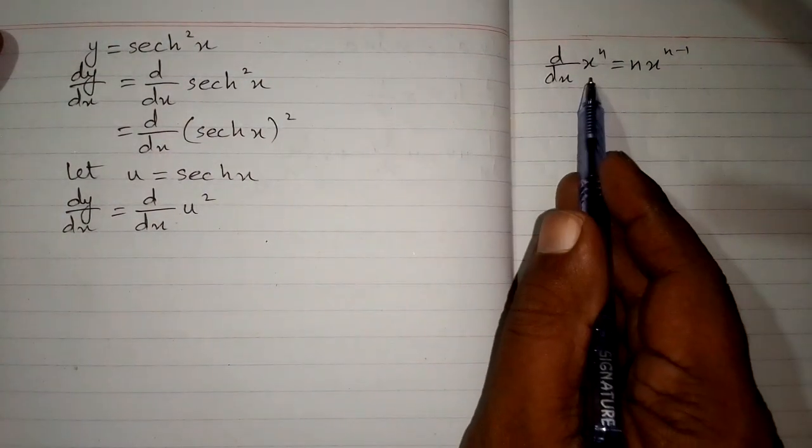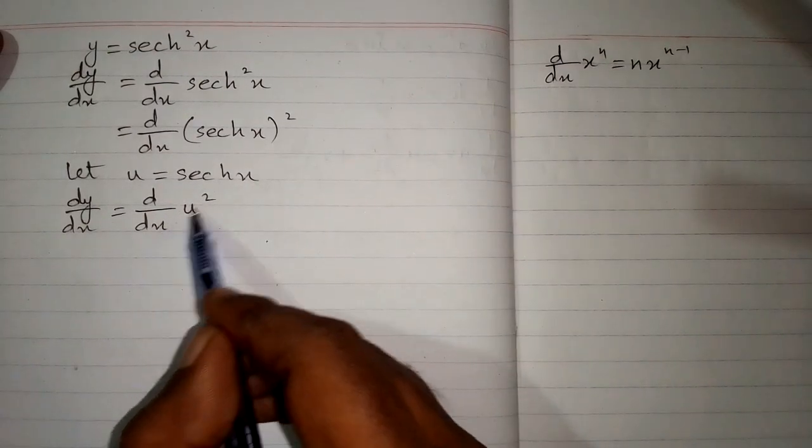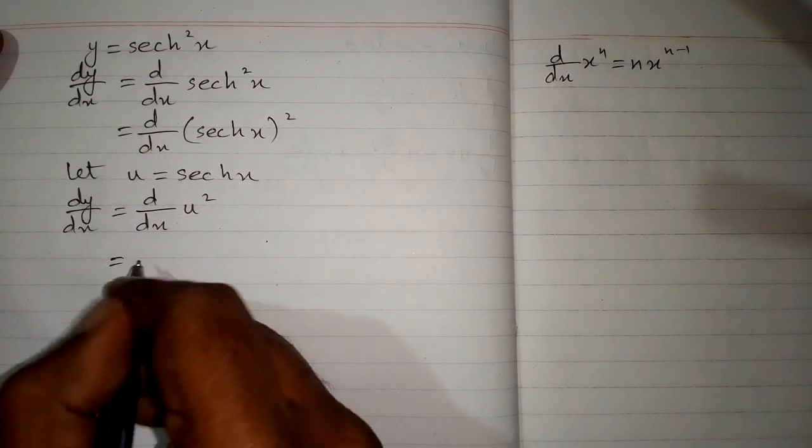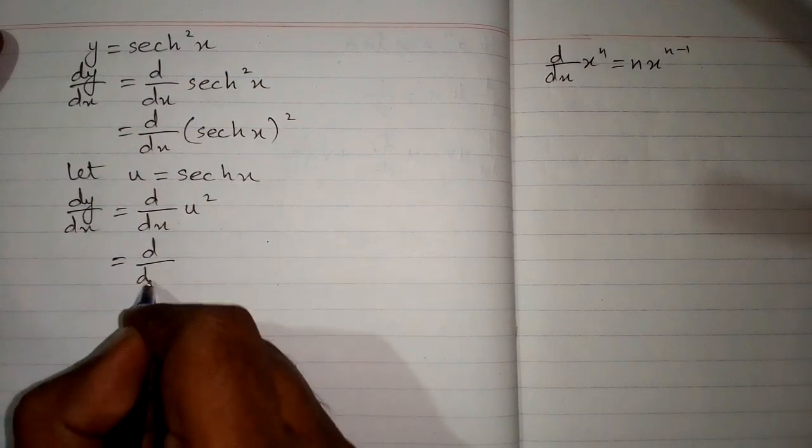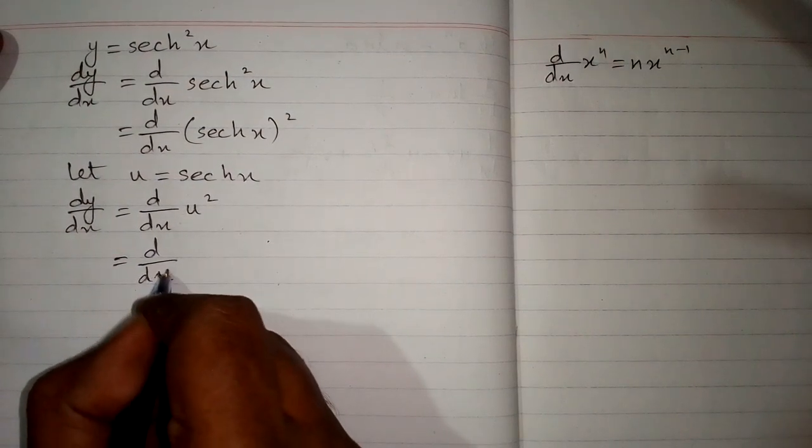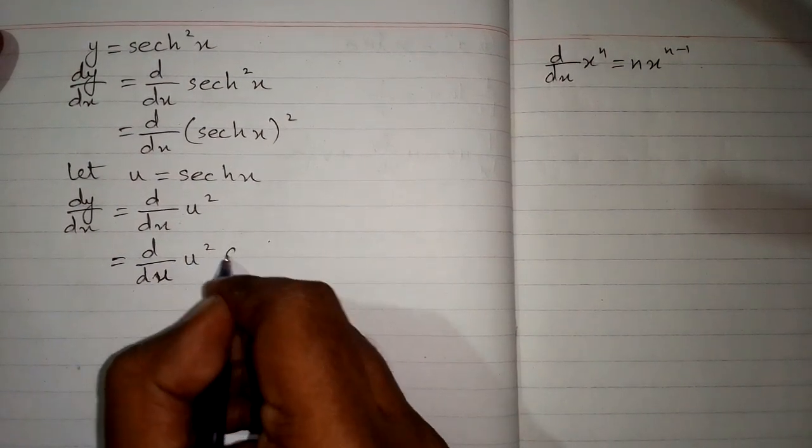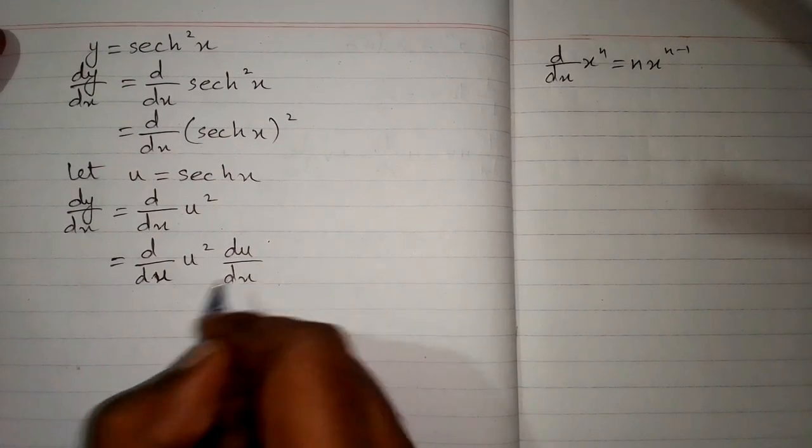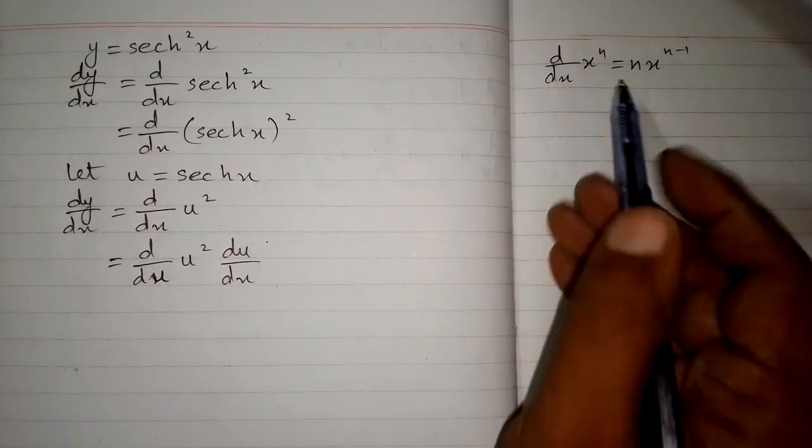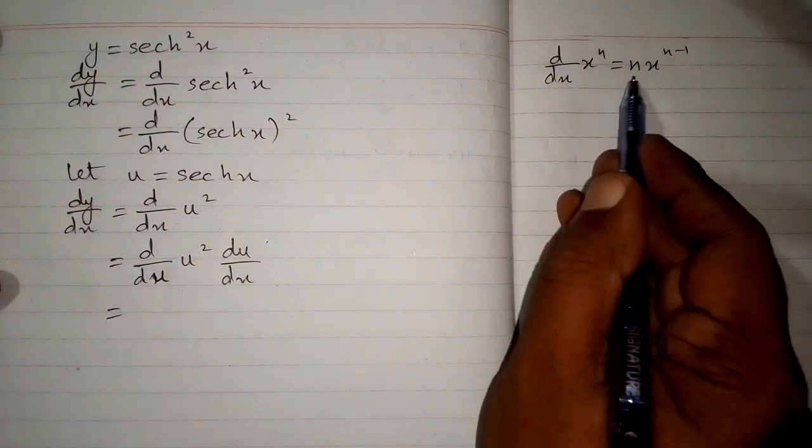But we can only apply this formula when the variables are the same. So we will apply the chain rule and write dy/du of u squared multiplied by du/dx.